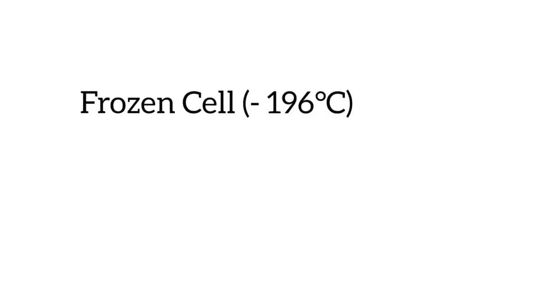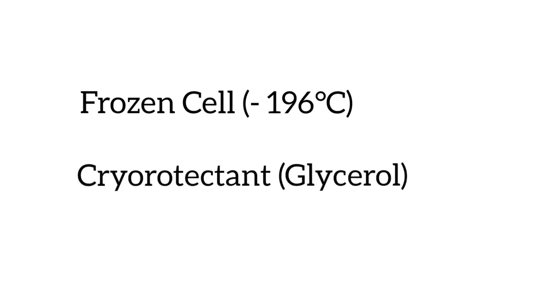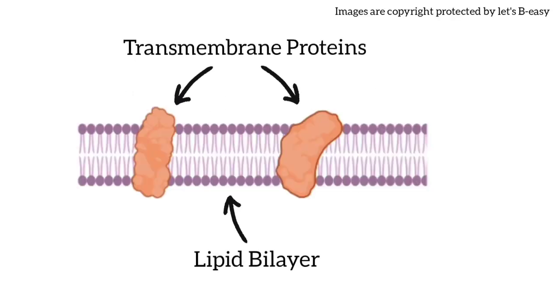First, cells are frozen and immobilized at the temperature of liquid nitrogen, that means minus 196 degrees Celsius, in the presence of a cryoprotectant or anti-freezing agent to prevent distortion from ice crystal formation. Here, as an example, I am showing the transmembrane protein in lipid bilayer.